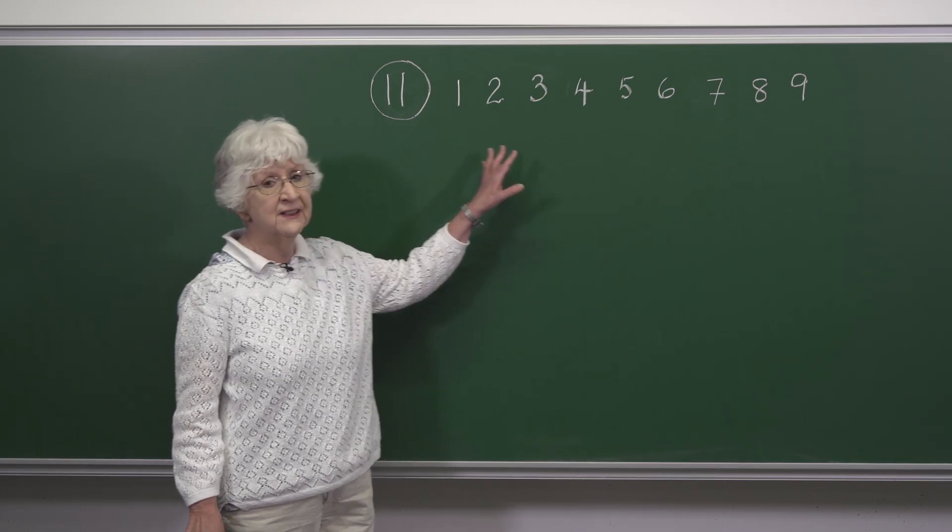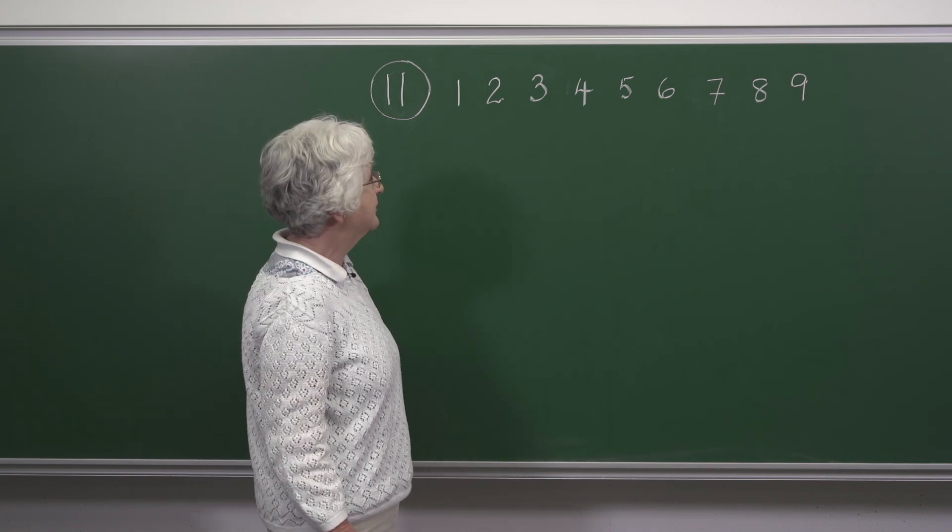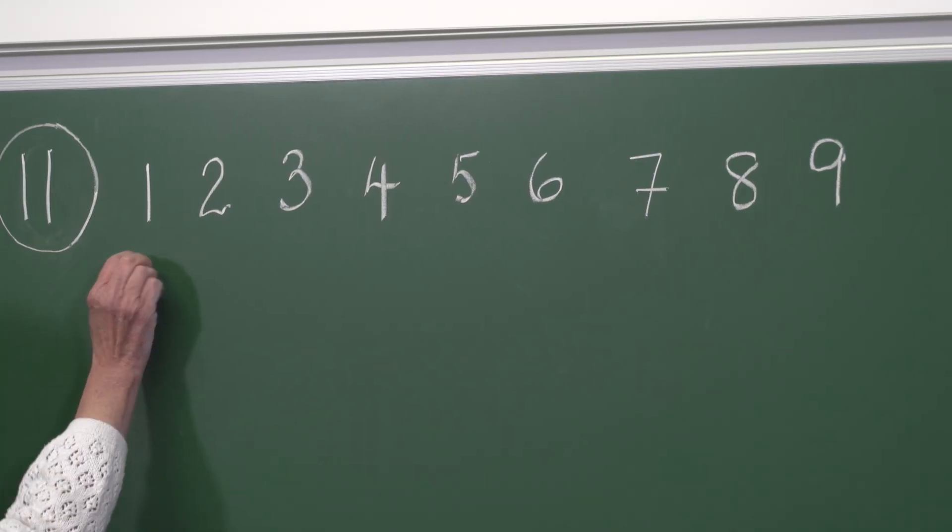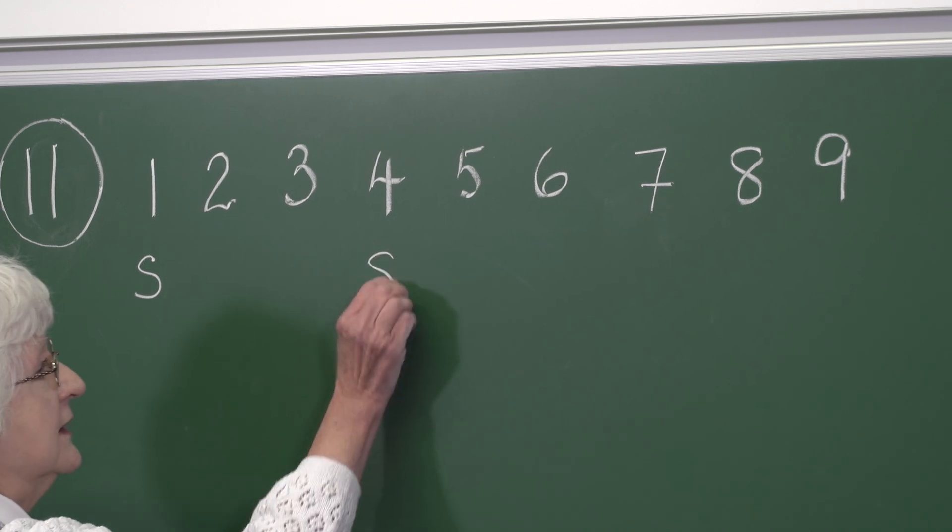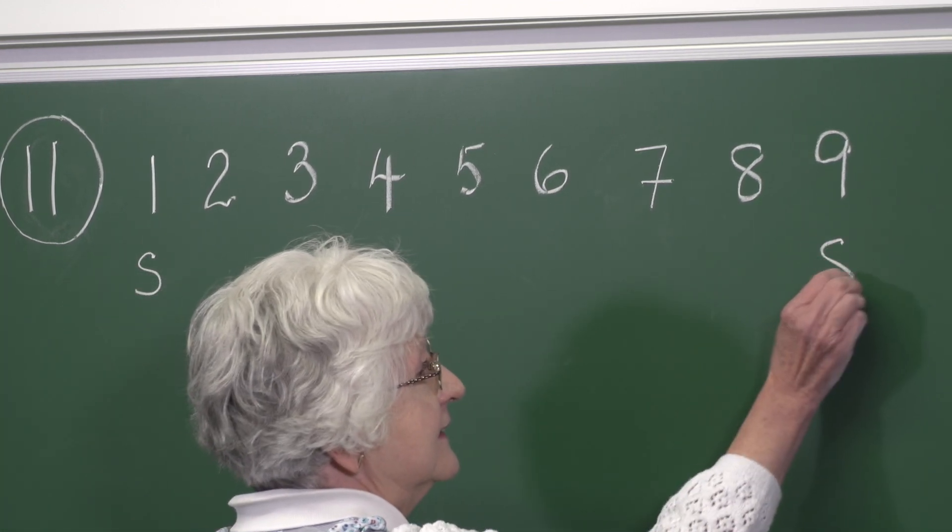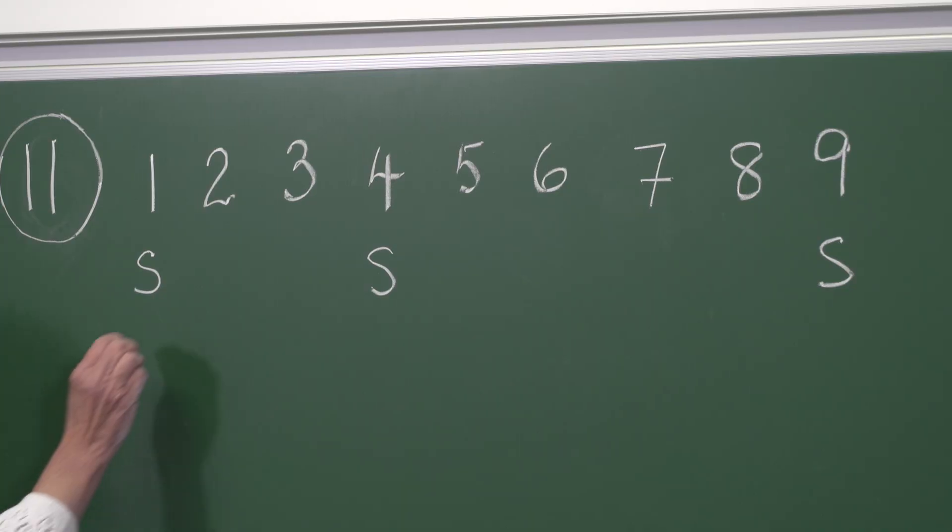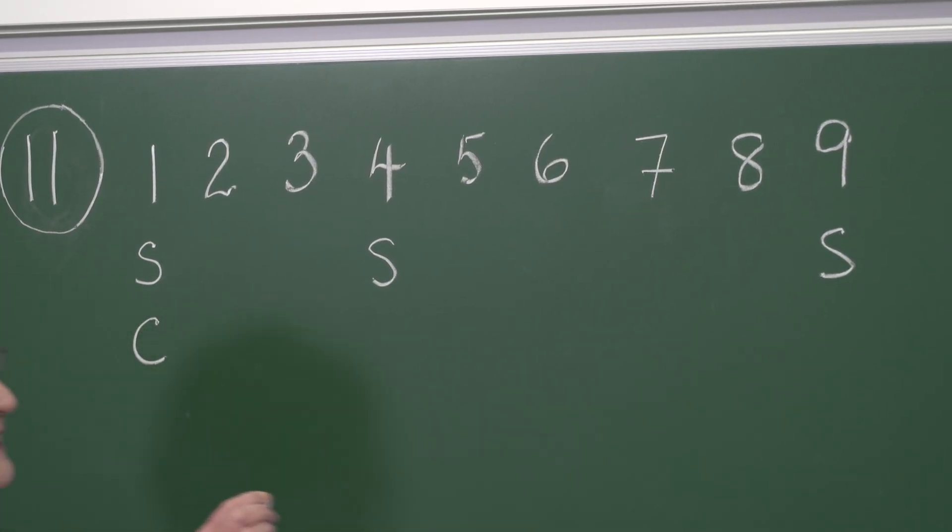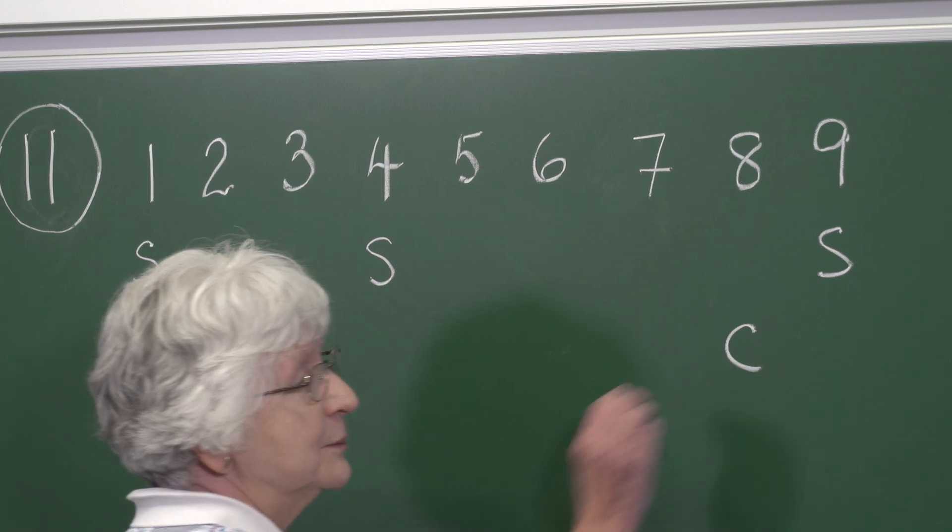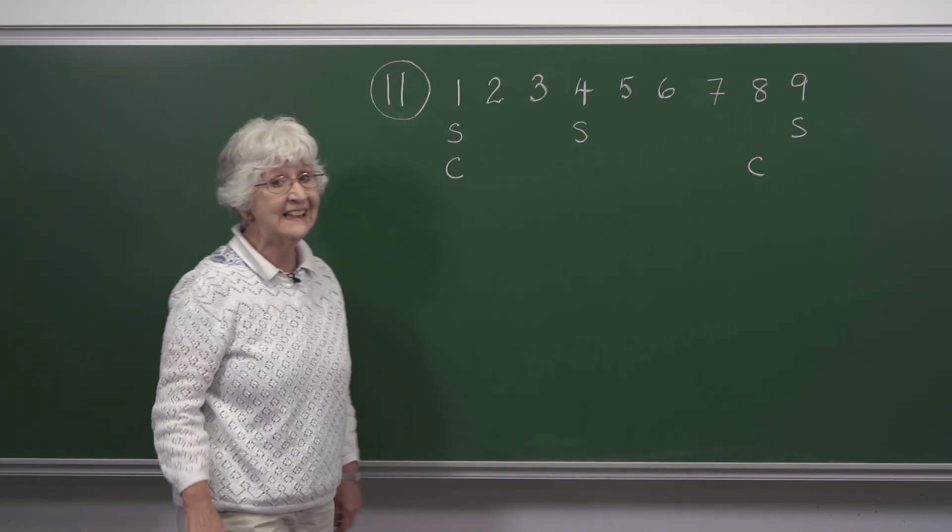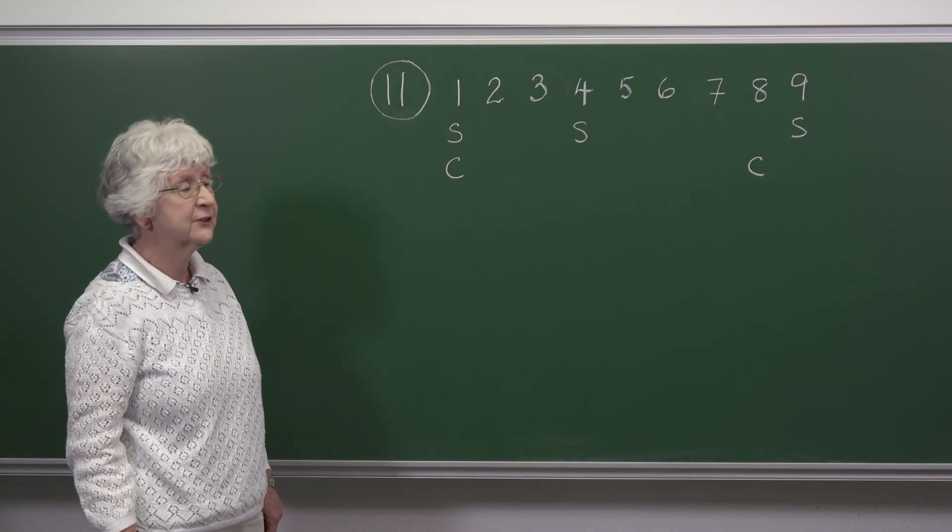Here we have the one-digit integers and from this we notice that 1, 4, and 9 are square, and that 1 and 8 are cubes because 8 is 2 times 2 times 2.